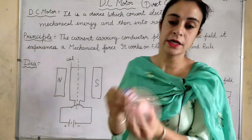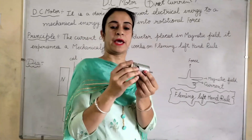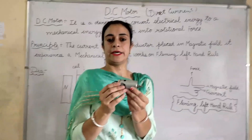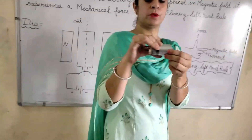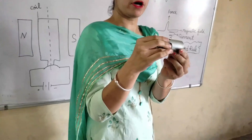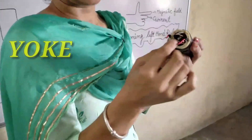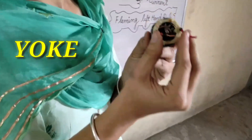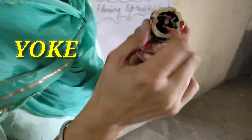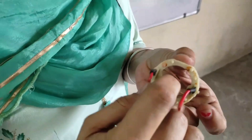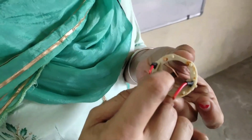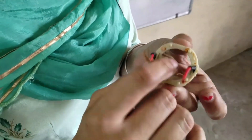Now we look at the construction. I took a DC motor. The front upper portion is called the Yoke. These two terminals are connected. This is our DC motor and the current is passed through it.